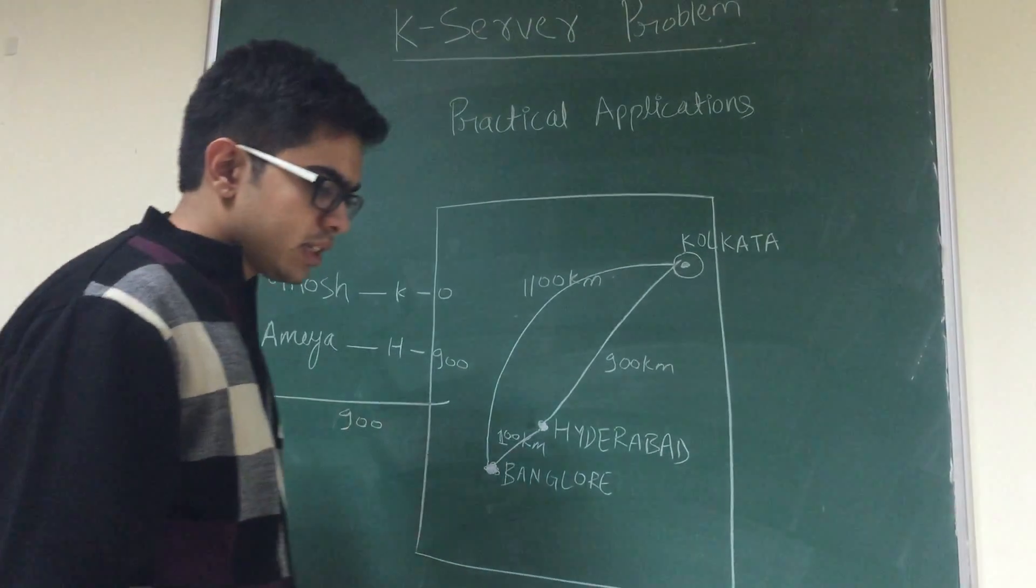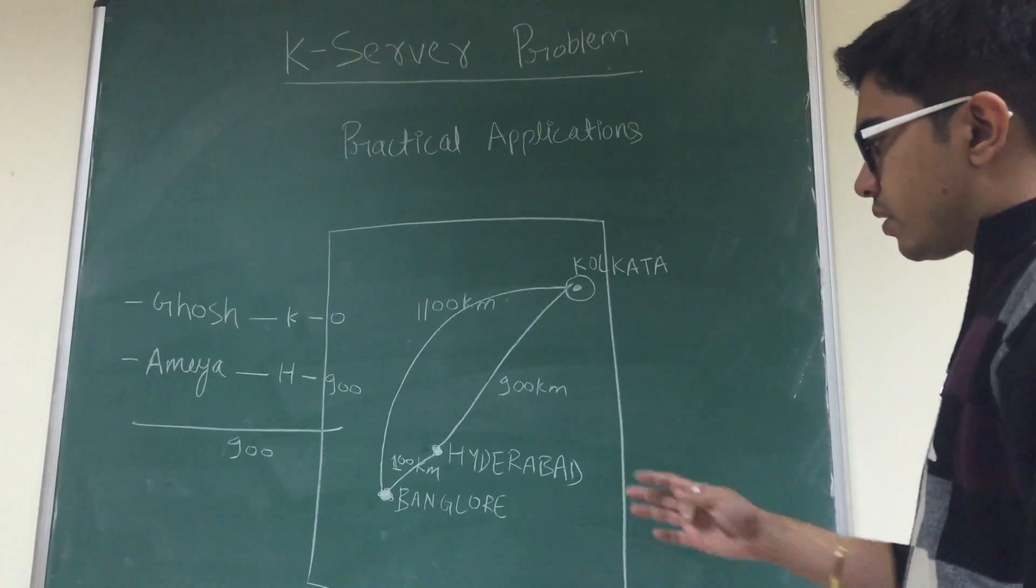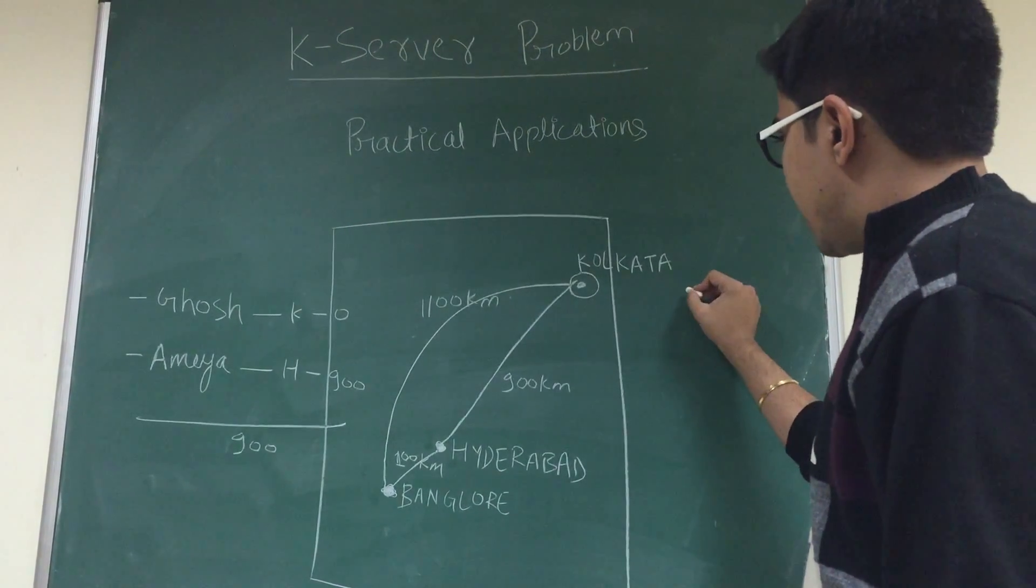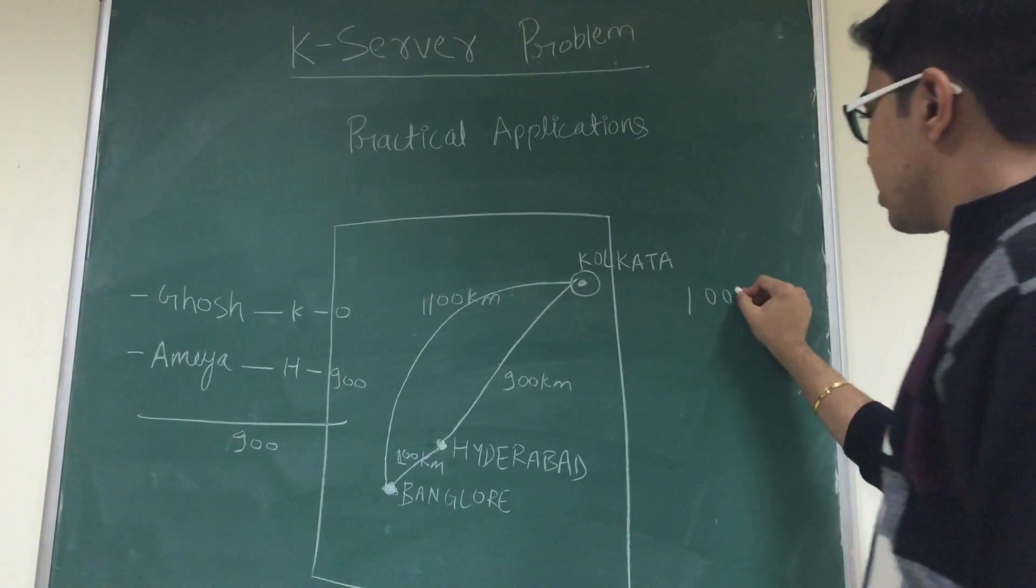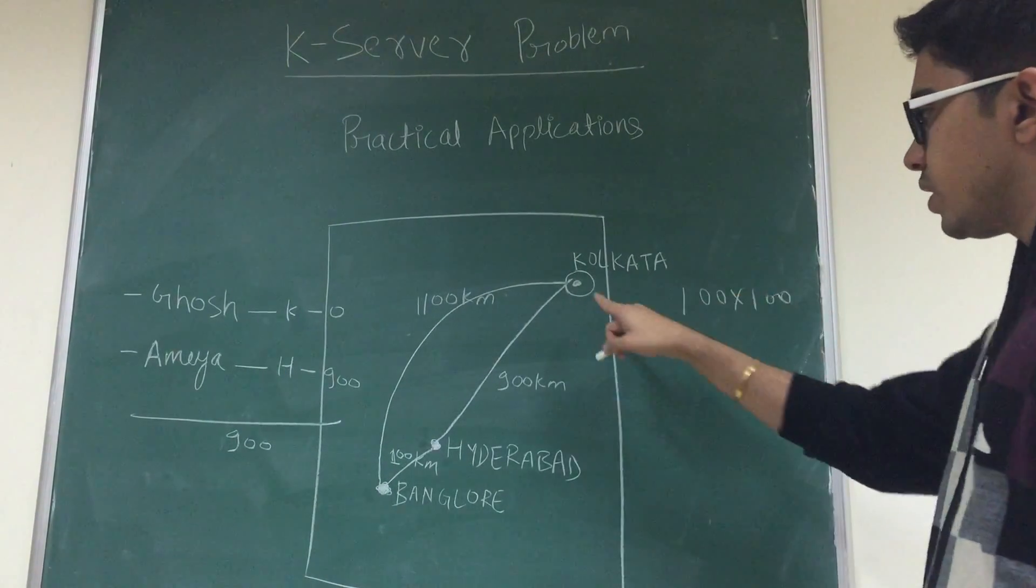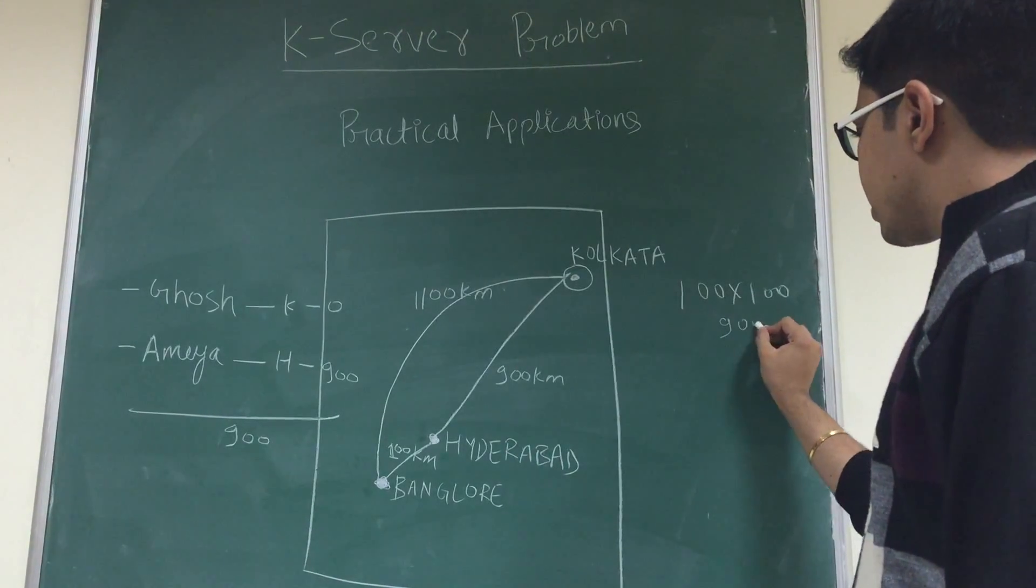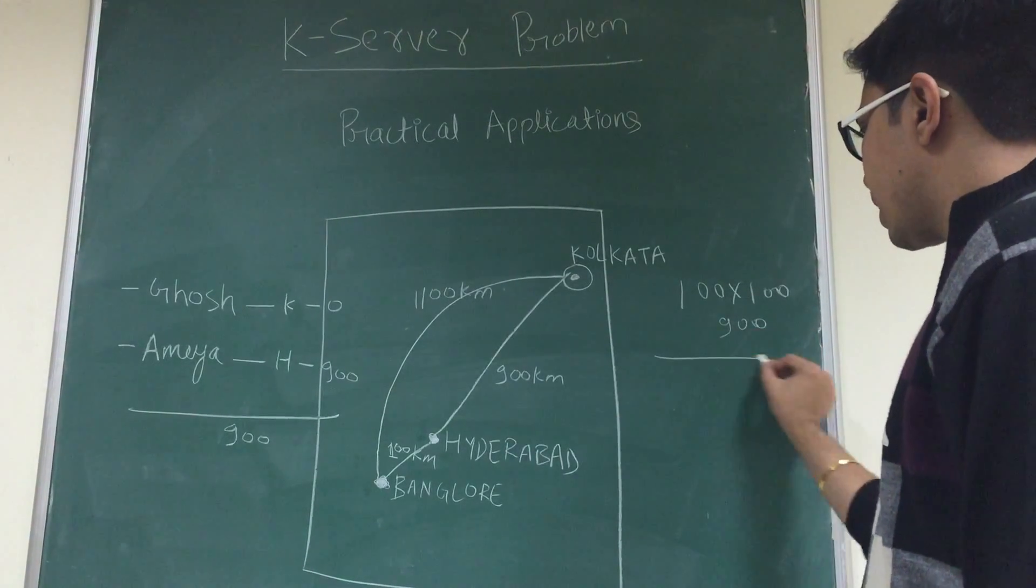Let's try to analyze this thing for the span of 100 days. The total distance travelled in the span of 100 days will be 100 into 100, which is 10,000 and 900 for initially to travel from Kolkata to Hyderabad. This distance is total of 10,900.